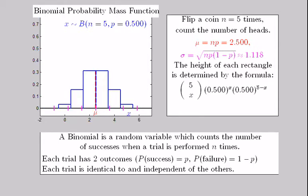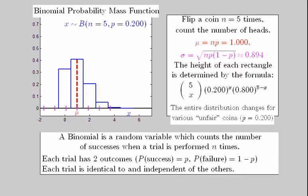Notice that the entire distribution changes for various values of p, representing different unfair coins.